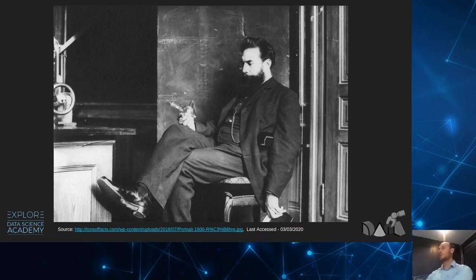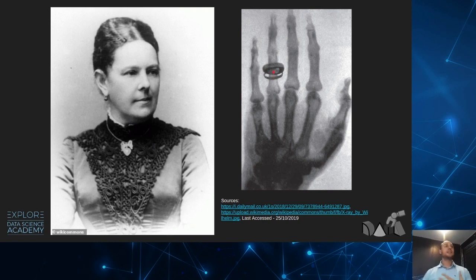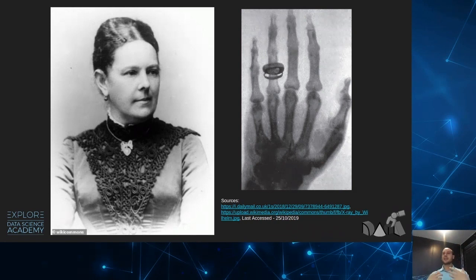For some reason, he placed his wife's hand between the cathode ray tube and a collector plate. What appeared on that collector plate was the skeletal silhouette of his wife's hand — and a very large wedding ring. He had produced the first ever radiograph using ionizing radiation. This was a huge breakthrough: never before had humans been able to look inside our bodies without causing damage or cutting them open. It was revolutionary.